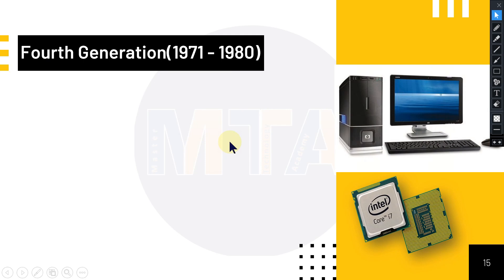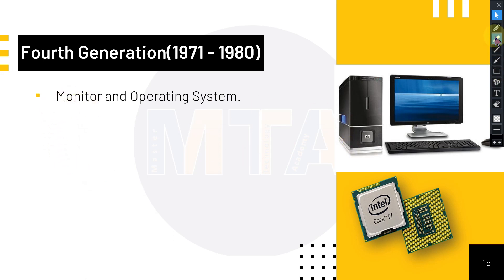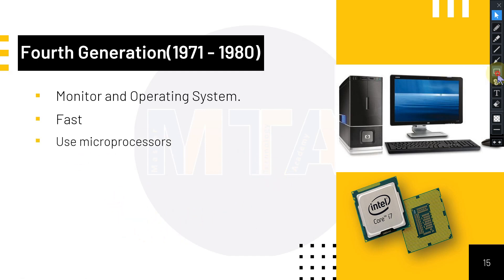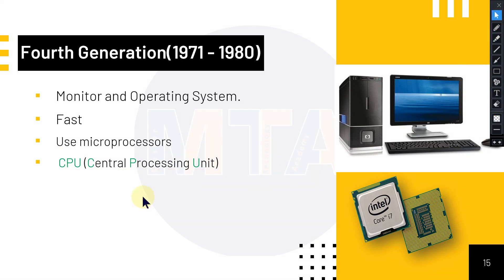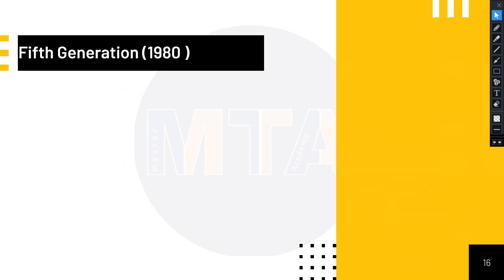The fourth generation of computers belongs to 1971 to 1980. These computers used monitors and could run operating systems well. They were faster than the first, second, and third generations because they used a microprocessor — also called the CPU, or Central Processing Unit. This microchip made the fourth generation significantly faster than previous generations.